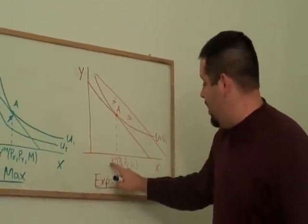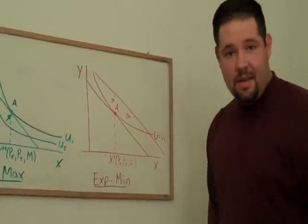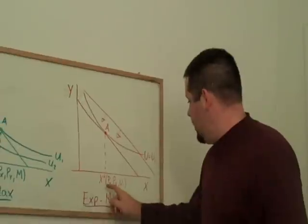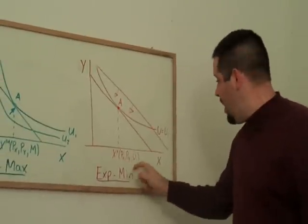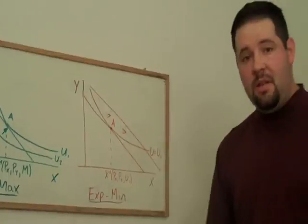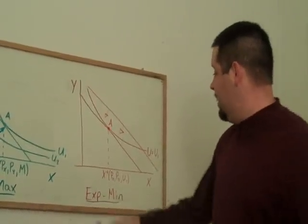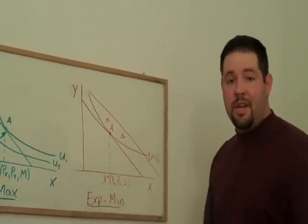So this is going to be what we call our Hicksian demand curves. This is going to be a function of the price of X, the price of Y, and the level of utility that we seek to obtain. And this comes from the expenditure minimization problem.